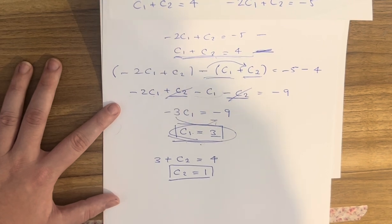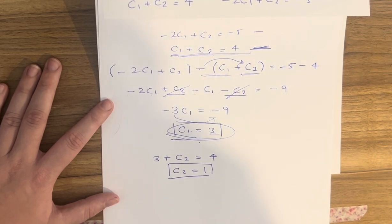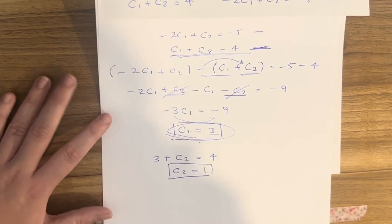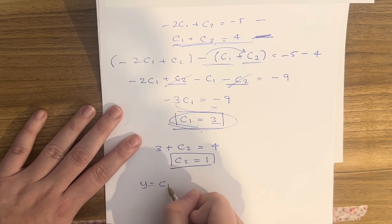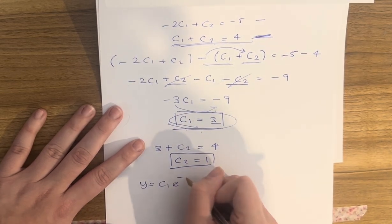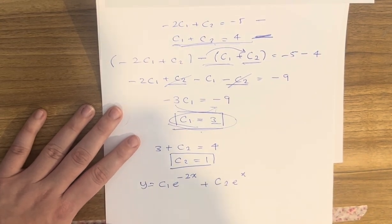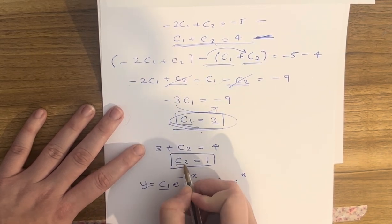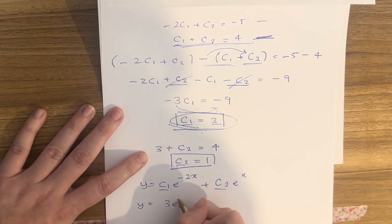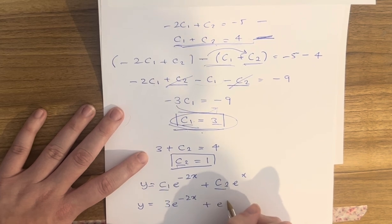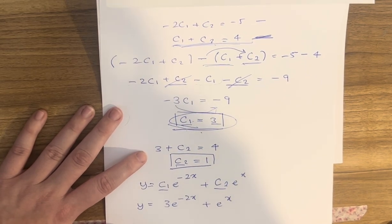Now we have c1 and c2 solved, so we substitute back into the general solution y equals c1·e^(minus 2x) plus c2·e^x. The final particular solution is y equals 3e^(minus 2x) plus e^x. That's the final solution for this initial value problem.